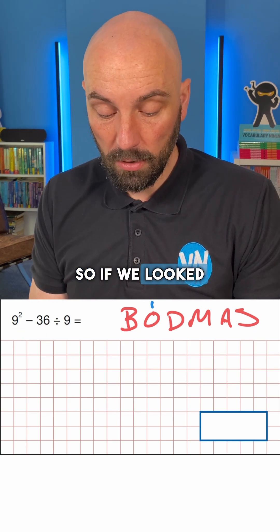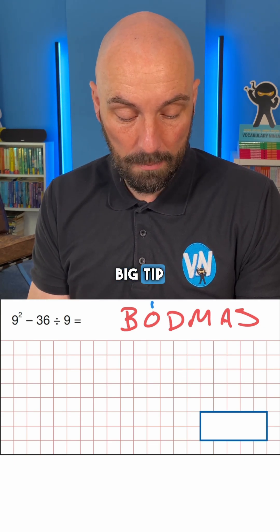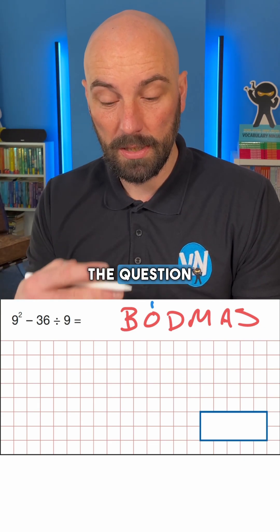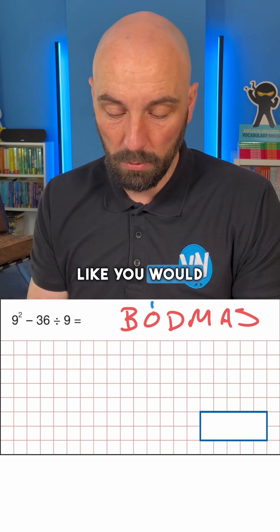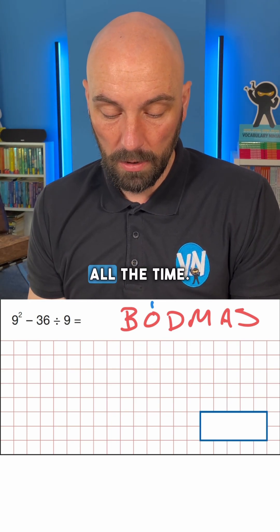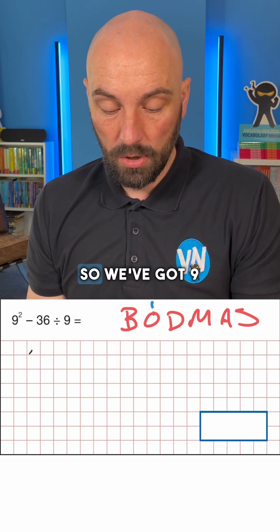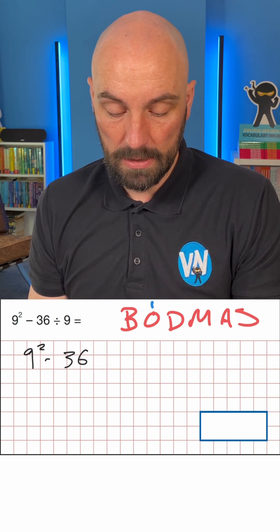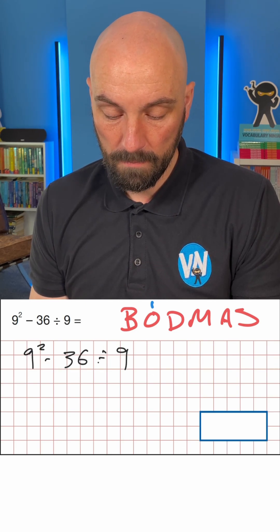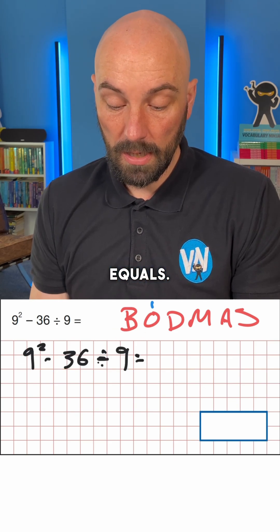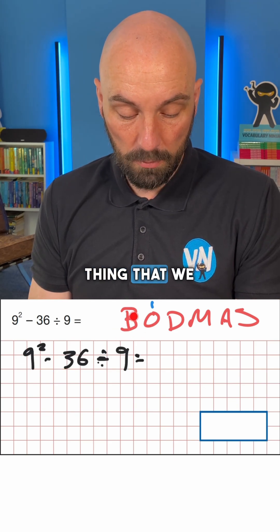My big tip is to always just continue rewriting the question, a little bit like you would do in algebra, so we're reducing the problem all the time. So we've got 9 squared take away 36 divided by 9 equals.